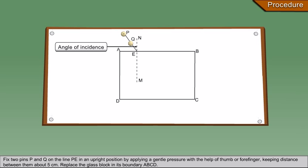Fix two pins P and Q on the line PE in an upright position by applying a gentle pressure with the help of thumb or forefinger, keeping distance between them about 5 cm.